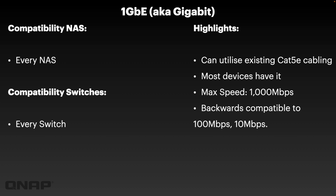When it comes to compatibility for the NAS, I didn't list them out because I'd have to list every single NAS that we have, and that's a lot. So I've just put every NAS. Every single NAS that we make would either come with a 1 gig ethernet port or a port that would work at 1 gig. The ones that don't have 1 gig — in every single situation we've gone to a faster port, so that might be the 2.5 gig standard or even faster.